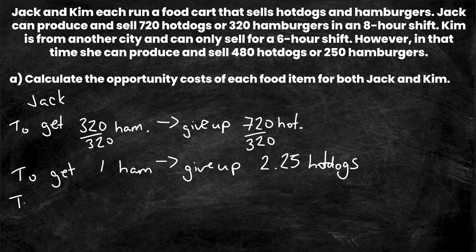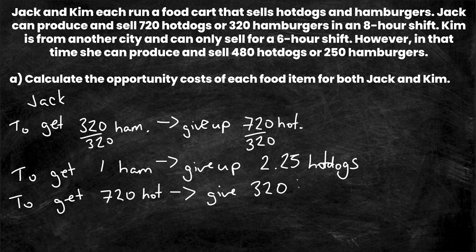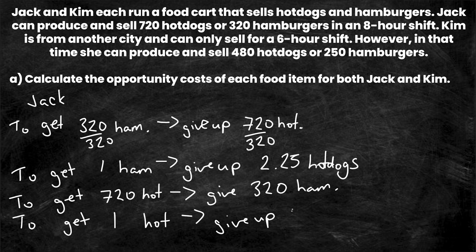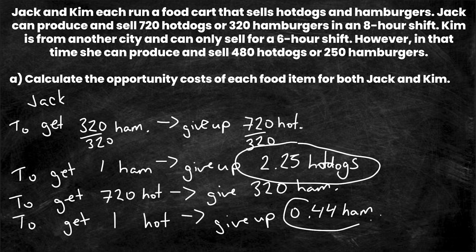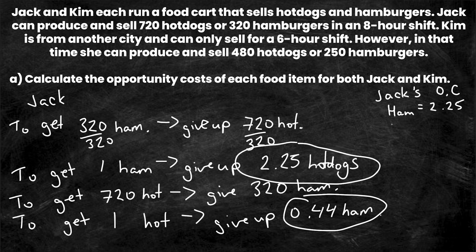Alternatively, to get 720 hot dogs, Jack must give up 320 hamburgers. Dividing both sides by 720, to get one hot dog he must give up 320/720, which is 0.44 hamburgers. So Jack's opportunity cost for hamburgers is 2.25 hot dogs, and his opportunity cost for hot dogs is 0.44 hamburgers — remember it's expressed in terms of what you give up.